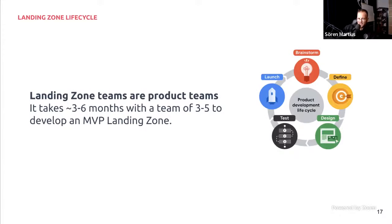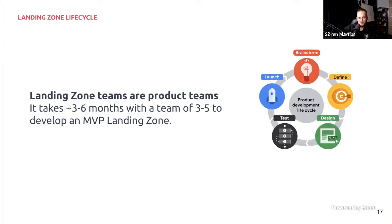The lifecycle of a landing zone is essentially the same as developing a product — it's considered a product. When organizations start adopting landing zones, it will most likely take three to six months with a three-to-five person product team to develop an MVP, simply due to how comprehensive landing zones are and the amount of alignment needed on the governance side. You should consider this a product that you keep developing as your organization grows.